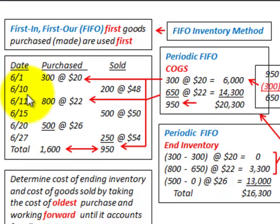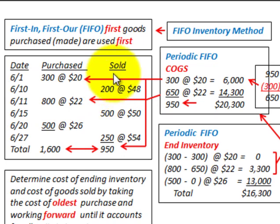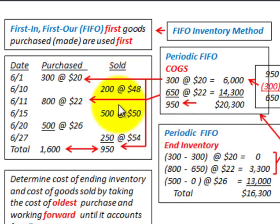We have it laid out where we have a specific date, a specific quantity purchased at a specific price, and then sales of those inventories at a specific quantity and price. The purchased amount represents our inventory and the sold numbers represent our sales. What we're going to be concerned with is just our cost of goods sold and our ending inventory — not our revenue account.